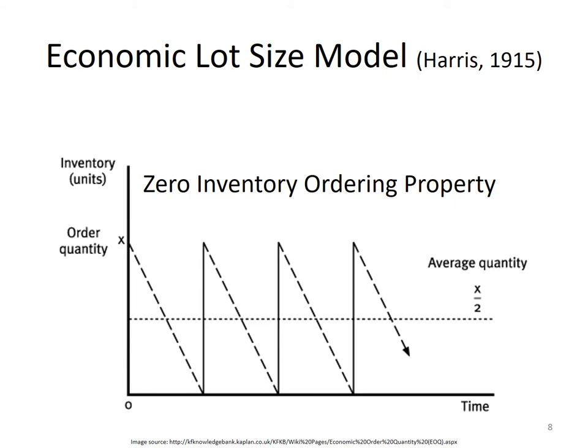EOQ — Economic Order Quantity — is the optimal point that minimizes total inventory cost. It has the zero inventory ordering property, meaning when the inventory reaches zero, immediately a new order of quantity Q arrives. The maximum inventory is Q and minimum is zero, so the average inventory is Q/2. If the order quantity is X, then the average inventory is X/2.